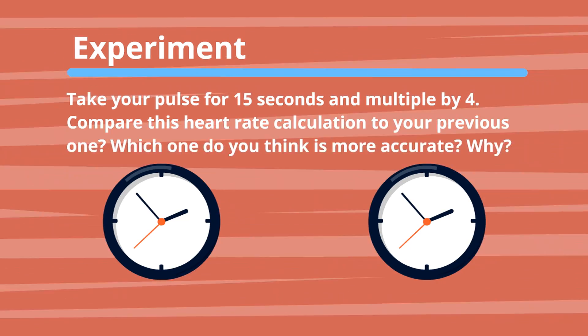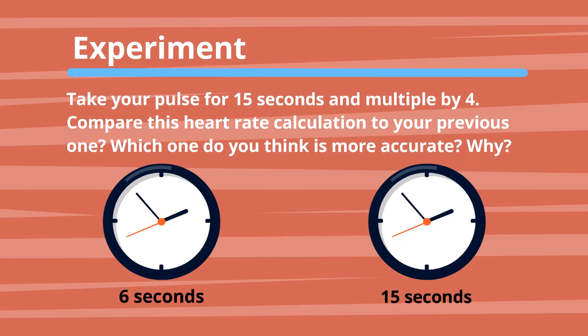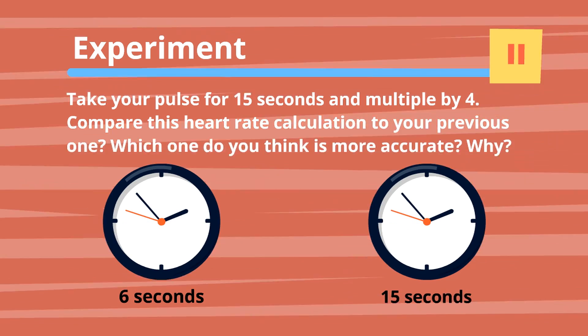Let's experiment. Take your pulse for 15 seconds and multiply by 4. Compare this heart rate calculation to your previous one. Which one do you think is more accurate and why?